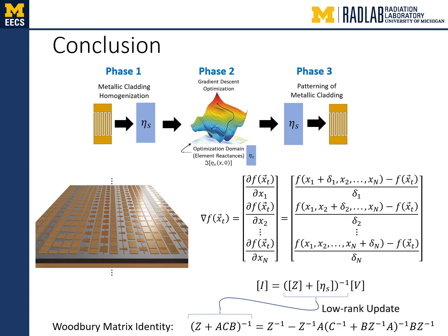In conclusion, the Woodbury matrix identity was used to accelerate the calculation of the gradient in gradient descent optimization of metasurface reactances. The metasurface reactances were optimized to introduce the necessary surface waves to satisfy a reactive GSTC. Without the Woodbury matrix identity, the optimization would have taken approximately 30 times longer, resulting in impractical design times. We thank you for your attention.